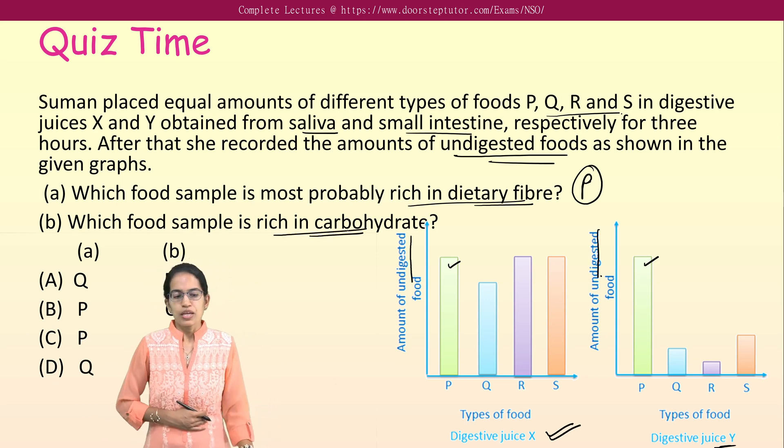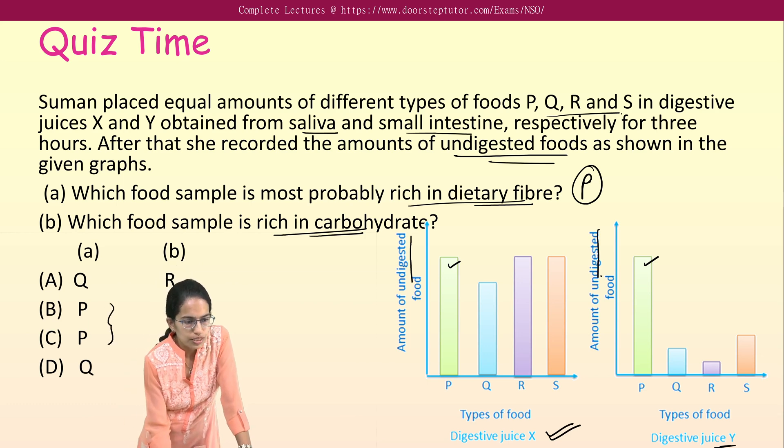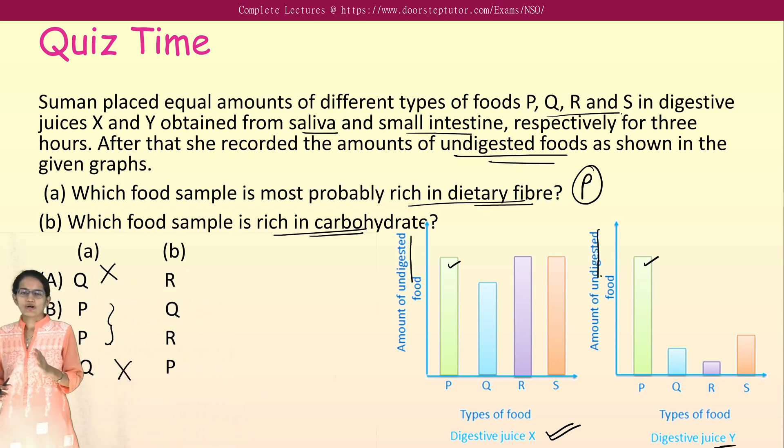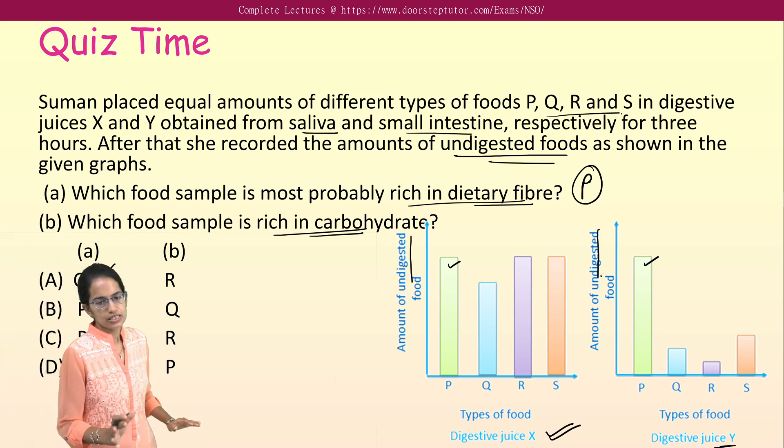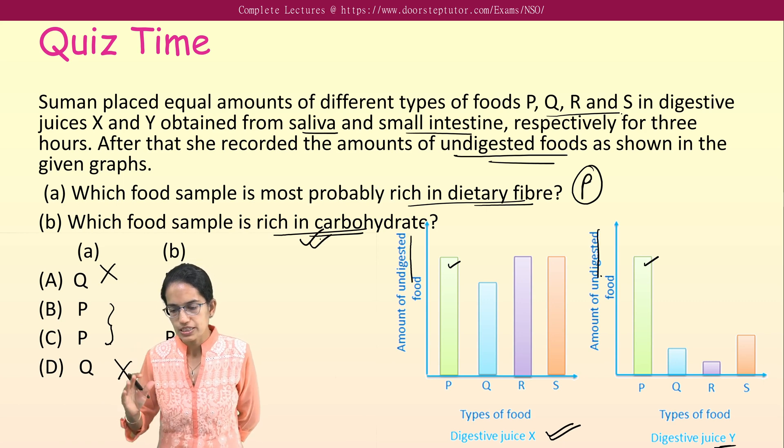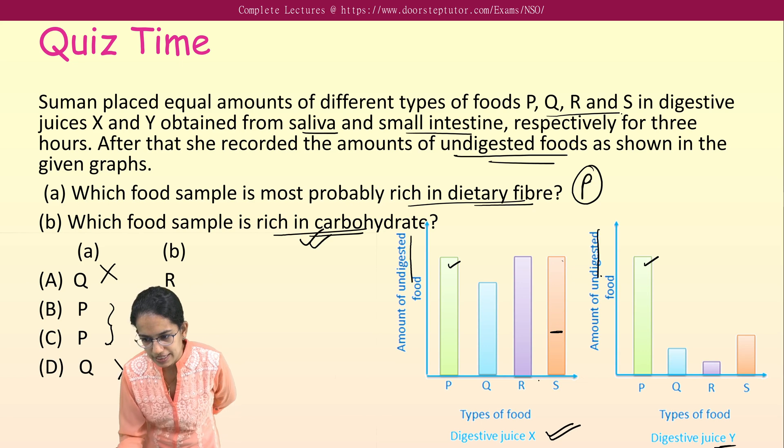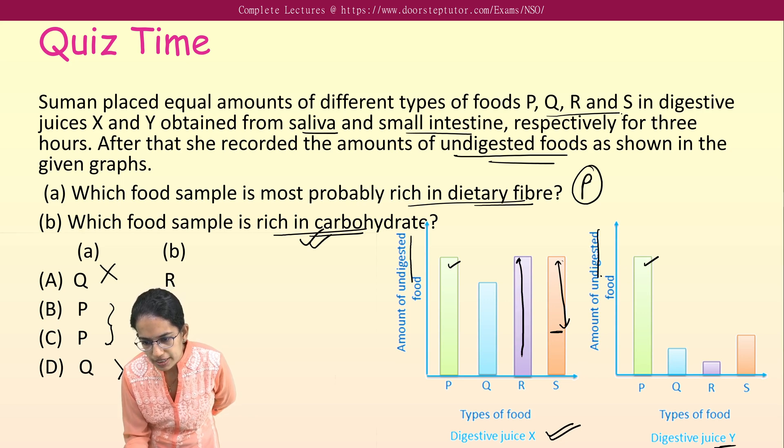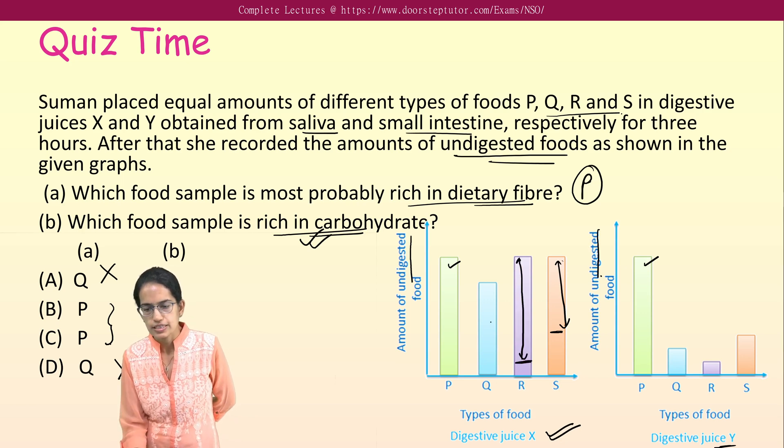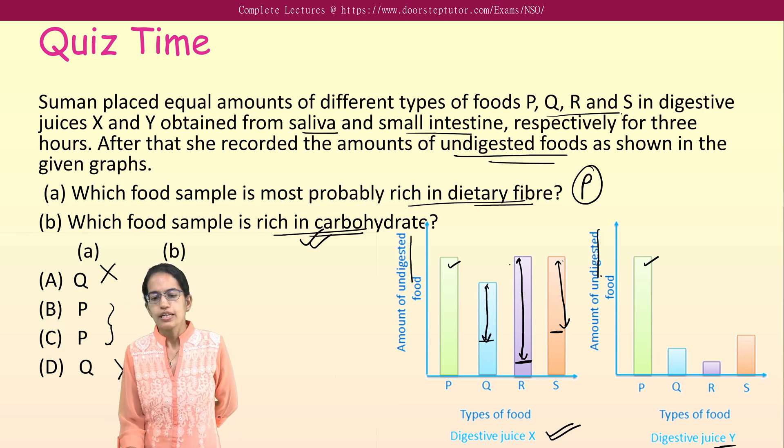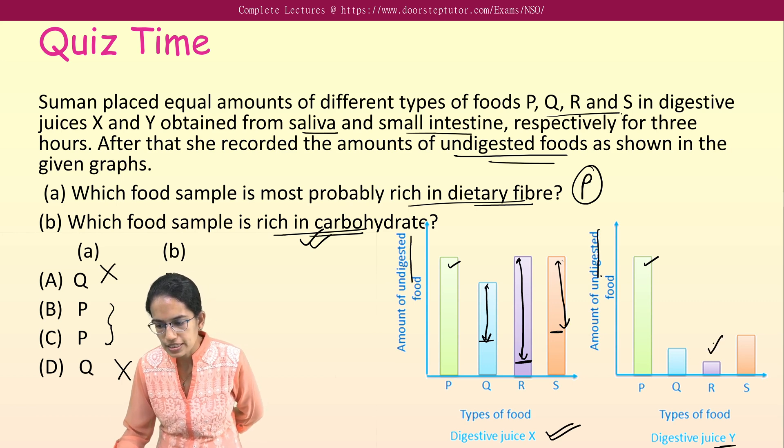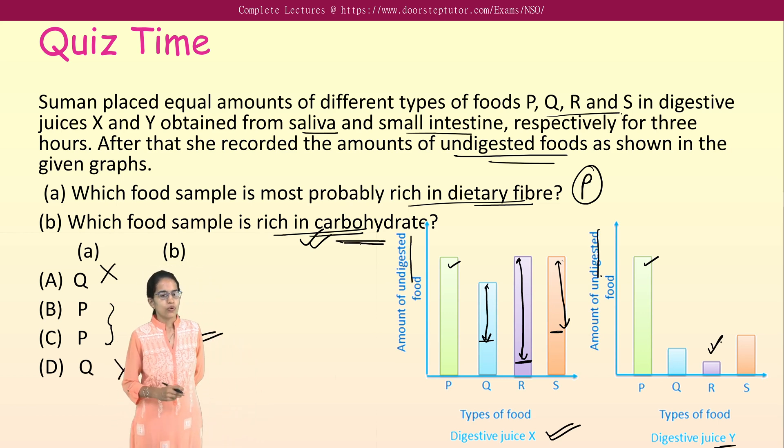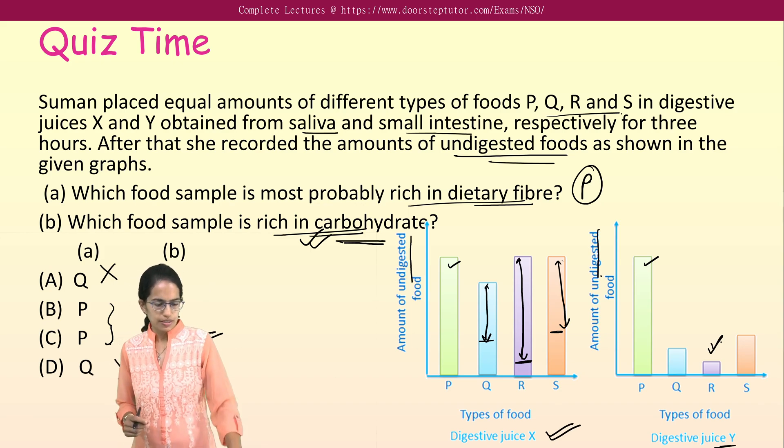The next is, which of the sample is rich in carbohydrate? Now rich in carbohydrate, so P would be the answer from these two. So I remove choices A and D. Now with P we have two options, we have either Q or R. But don't go on to the option, go on to the diagram here. We have to identify the sample which is rich in carbohydrate. So which is digested most? I see S and S is digested till here. So only this amount of S is digested in juice Y. R, a lot of it is digested. So this is the amount of R which is digested. And Q, this is the amount of Q which is digested. So the highest amount of food which is digested in juice Y is what? R. So R would be rich in carbohydrate. So R would be the answer here. So P and R would be the correct options.